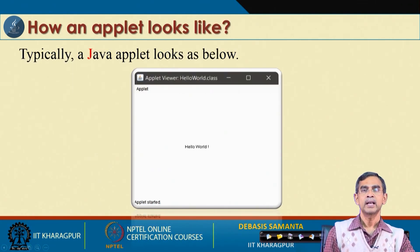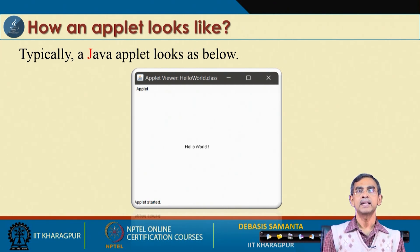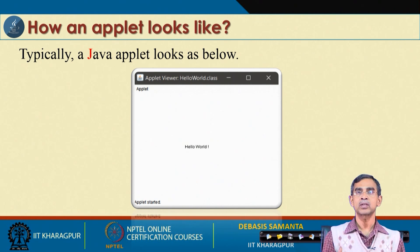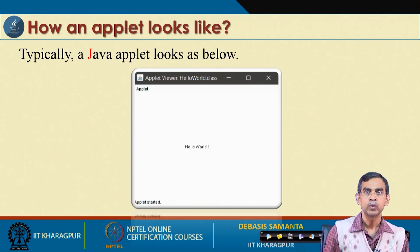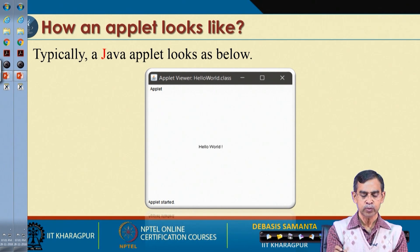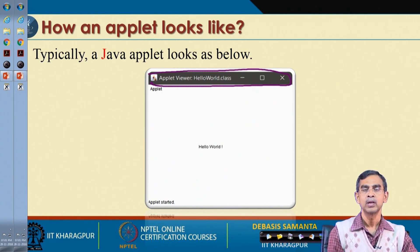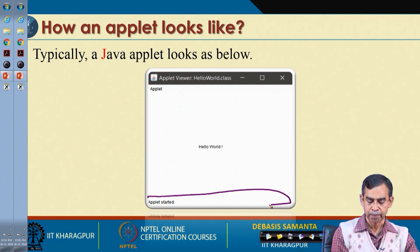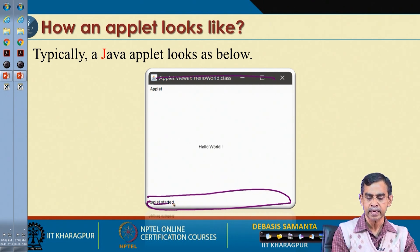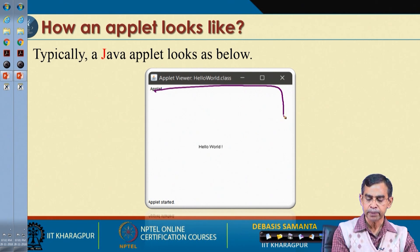In very simple words, an Applet is nothing but a window. That is why the operating system based on this concept is named the Windows operating system — the most popular one from Microsoft Corporation. An Applet is nothing but a window, and as you can see, this window has a few things: there is the title of the Applet at the top and the status bar at the bottom, and then there is the view area of the Applet.